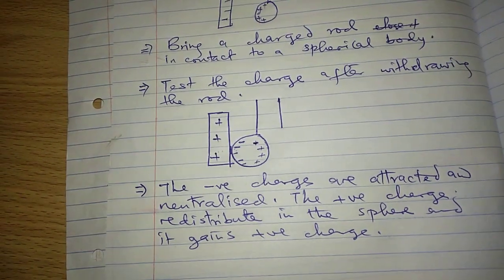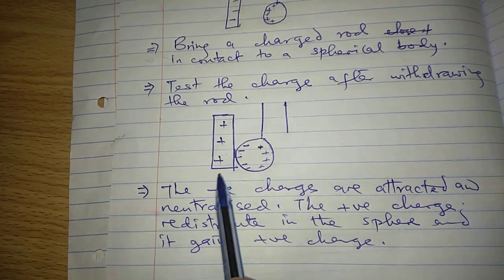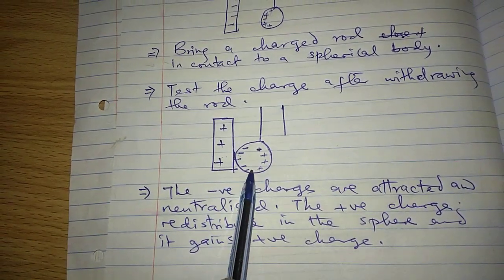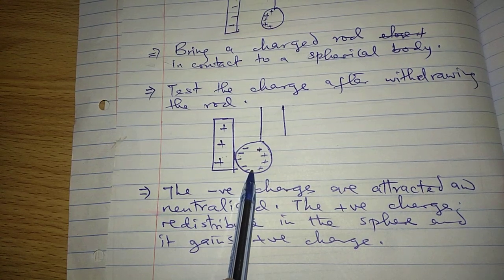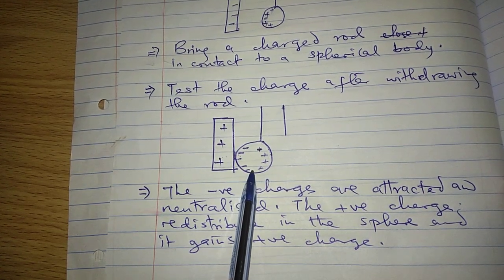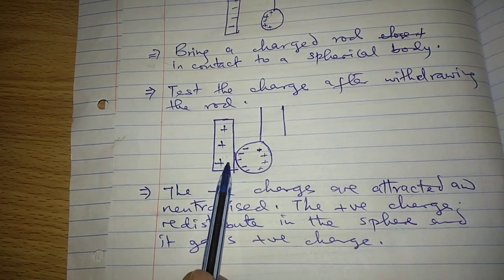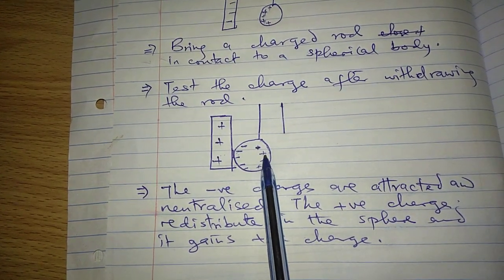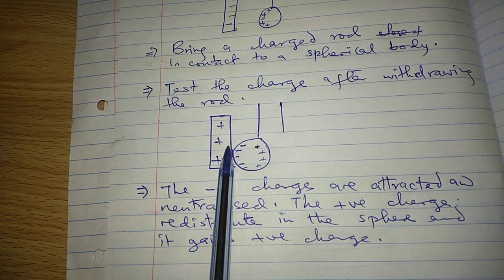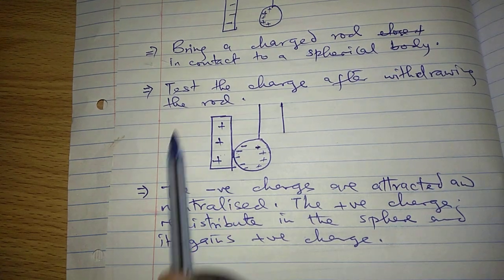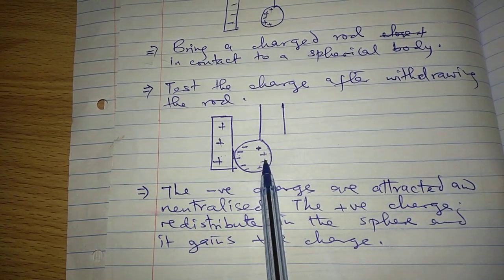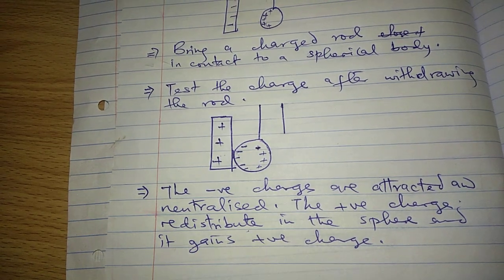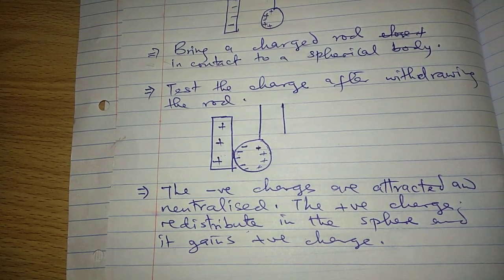So you'll find that because you've brought a positively charged rod and attracted negative charges — or electrons — they get neutralized due to the contact. And now the positive charges which have been repelled to the other end, once the rod is withdrawn, they are no longer being repelled and they are free to redistribute themselves in the sphere, and it becomes positively charged.